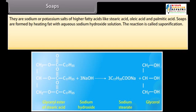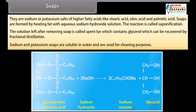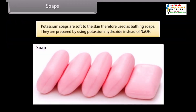Soaps are sodium or potassium salts of higher fatty acids like stearic acid, oleic acid, and palmitic acid. Soaps are formed by heating fat with aqueous sodium hydroxide solution; the reaction is called saponification. The solution left after removing soap is called spent lye, which contains glycerol that can be recovered by fractional distillation. Sodium and potassium soaps are soluble in water and are used for cleaning purposes. Potassium soaps are soft to the skin and therefore used as bathing soaps; they are prepared by using potassium hydroxide instead of NaOH.